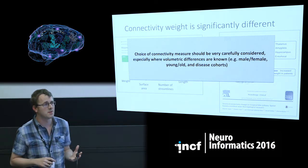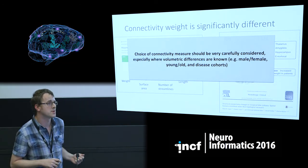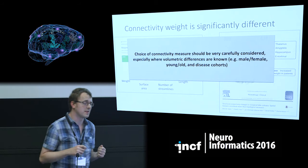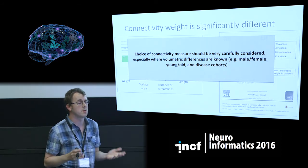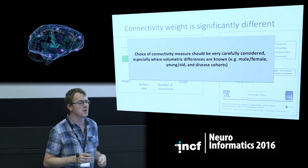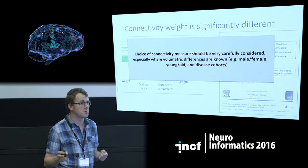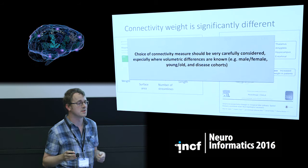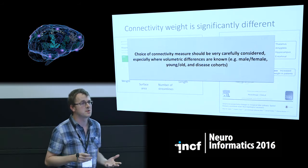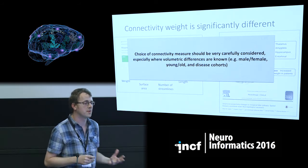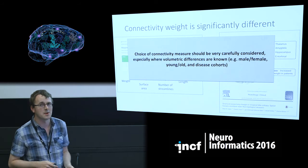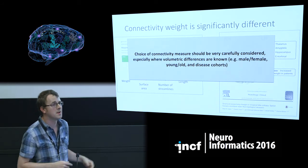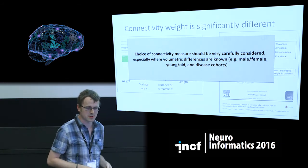I would say that if you're doing any connectomic studies looking at differences between groups — whether male or female, where females have smaller brains than men generally, or young and old, where older people have thinner cortices, or disease cohorts with known differences — one should really take this into account and be aware of this in any structural connectomic studies.